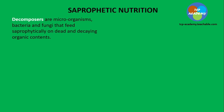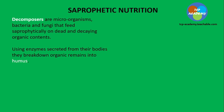Decomposers are microorganisms — bacteria and fungi — that feed saprophytically on dead and decaying organic contents. They use enzymes secreted from their bodies to break down organic remains into humus. So it's very clear that the vegetivores, the larger organisms, are going to be breaking down the remains first, after which they would have increased the surface area, and then the decomposers would act on this matter being decomposed.